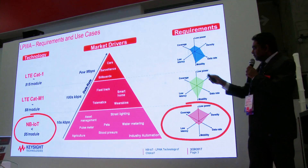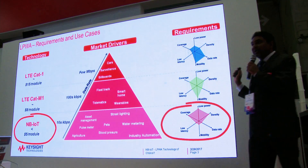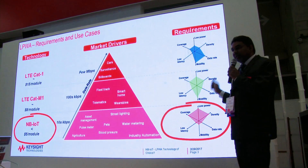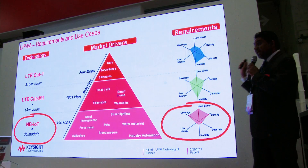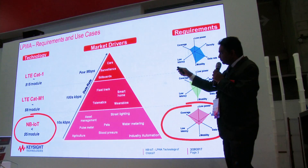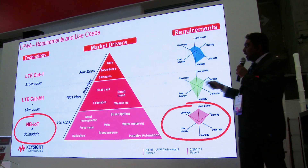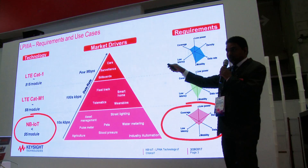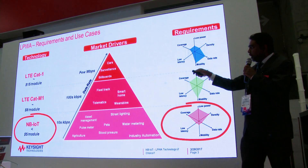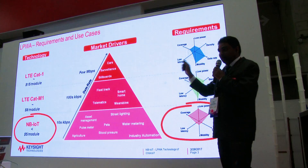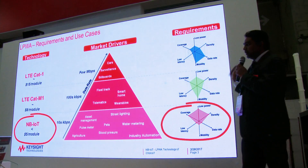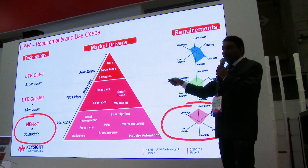As you move up the pyramid, the requirements change. Mobility is introduced, data rate increases, and latency improves. This enables other use cases like smart home and smart city, but it comes at the expense of higher cost per module. You can see LTE CAT-M1 and CAT-1 have a higher cost per module, and there's always a trade-off between different requirements and costs.